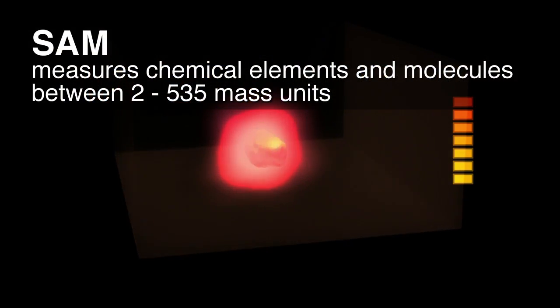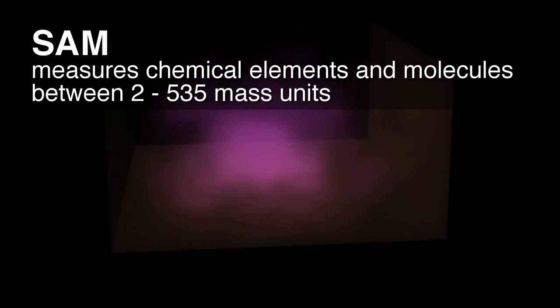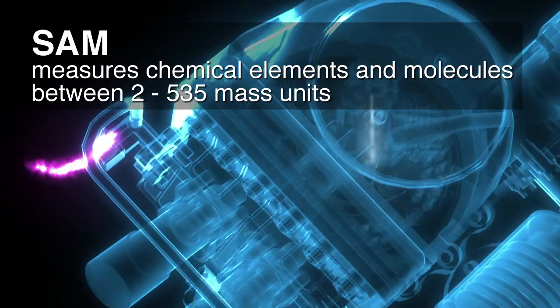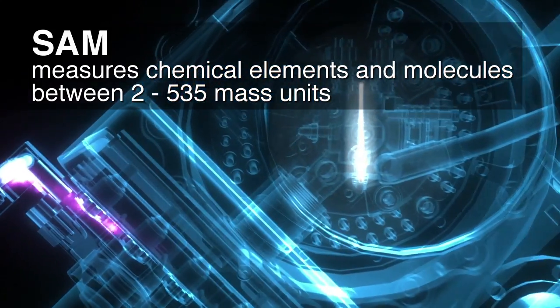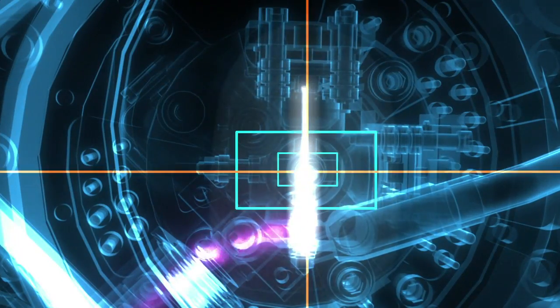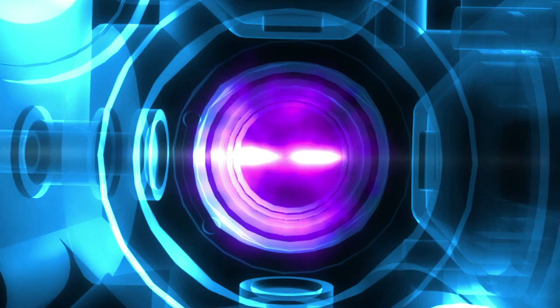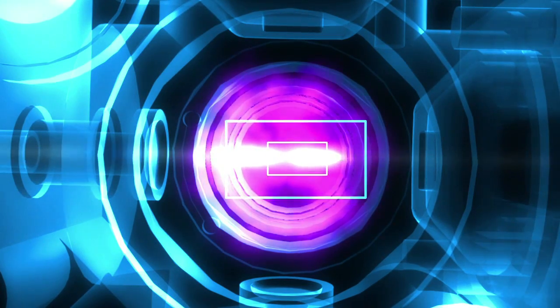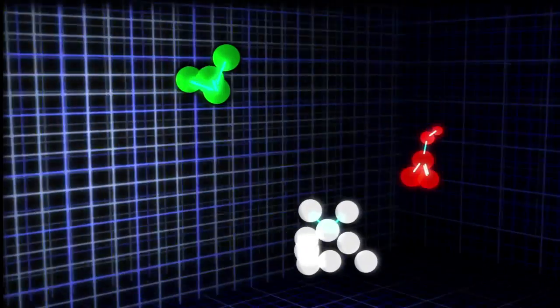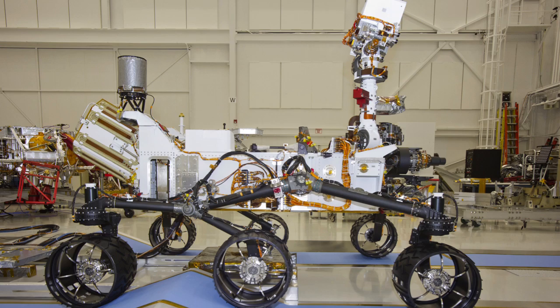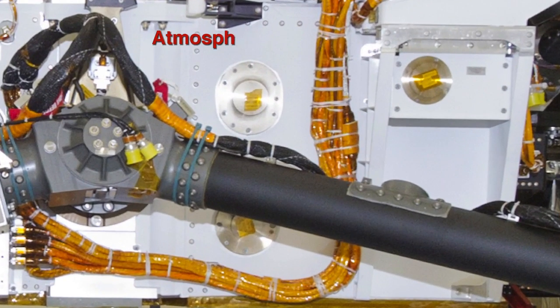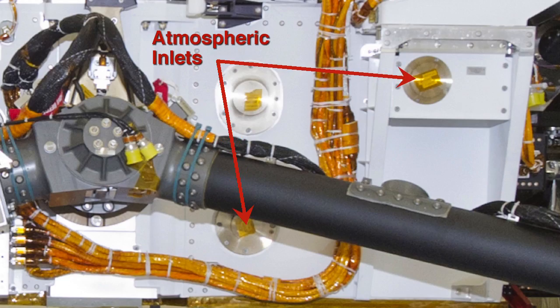SAM measures chemical elements and molecules in a mass or size range between 2 and 535 mass units, and we do this by looking at gases. We can bake solid samples until they give up their volatile components or gases, or we can directly inhale the Martian atmosphere through our inlet ports.